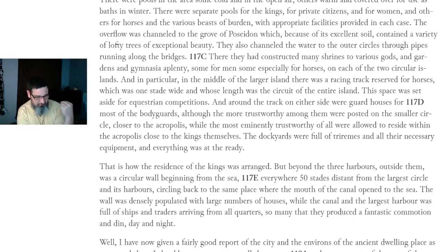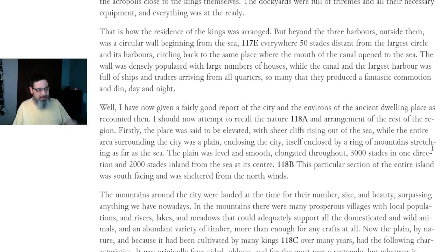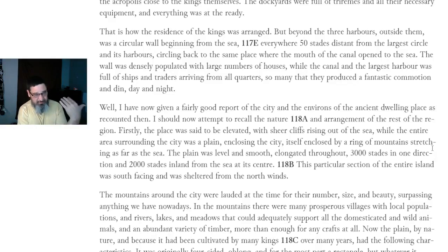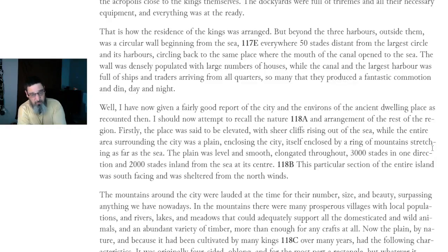The most eminently trustworthy guards were allowed to reside within the Acropolis close to the kings themselves. The dockyards were full of triremes and all of their necessary equipment and everything was at the ready. Beyond the three harbors, outside them, was a circular wall beginning from the sea, 50 stades distant from the largest circle, circling back to the same place where the mouth of the canal opened to the sea. The wall was densely populated with a large number of houses, while the canal and the largest harbor were full of ships and traders arriving from all quarters, so many that they produced a fantastic commotion, day and night.